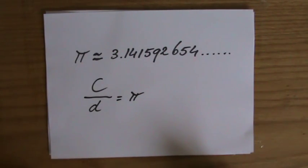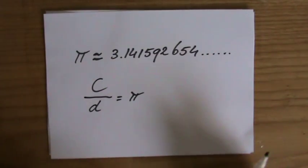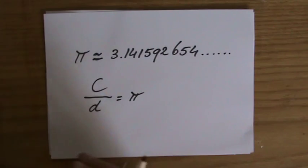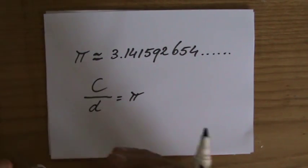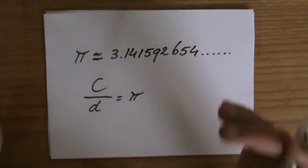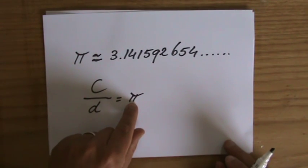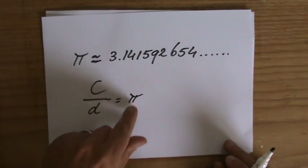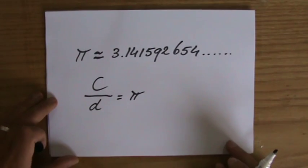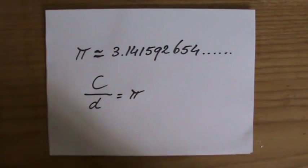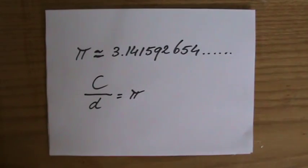How is that useful? Go to the videos on the circumference of circles, how to calculate the circumference of a circle, and go to the videos on how to find the area of a circle. Then you'll find out that we're going to use that number — because Pi is a number — all the time. It's here to help you. Go to the next video and find out more.